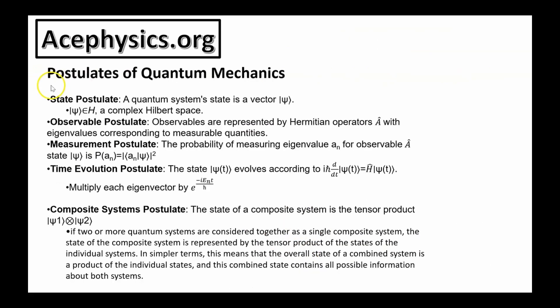On this slide, I have the postulates of quantum mechanics. These postulates are the rules, discovered through experiment and theory, that allow us to solve quantum mechanics problems and predict how quantum systems behave. However, just hearing these rules isn't enough to fully grasp them if you're encountering them for the first time. So I'm going to explain them by walking you through an example involving neutrino oscillation.